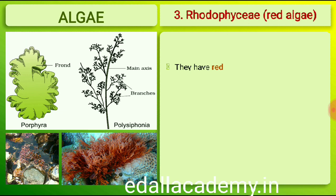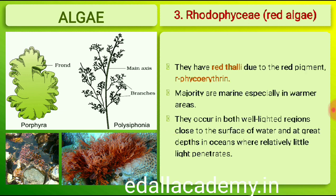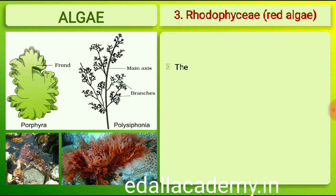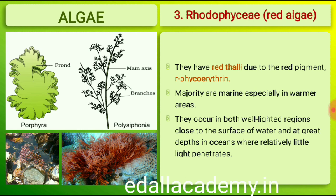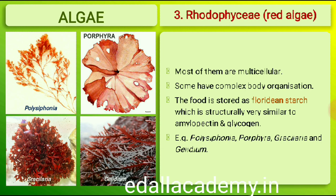The members of Rhodophyceae are commonly called red algae because of the predominance of the red pigment phycoerythrin in their body. Majority of the red algae are marine with greater concentrations found in the warmer areas. They occur in both well-lit regions close to the surface of water and also at great depths in oceans where relatively little light penetrates. The red thalli of most red algae are multicellular, and some of them have complex body organization. Food is stored as floridean starch, which is very similar to amylopectin and glycogen in structure.